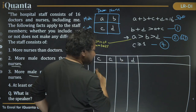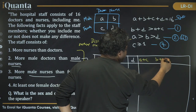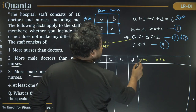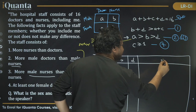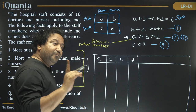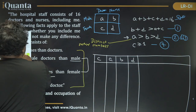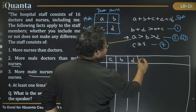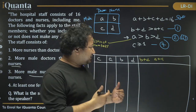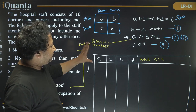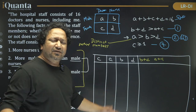I'll set up columns for c, a + b + d, a, b, d, b + d, and a + c. The sum of the last two columns always equals 16. Since b + d must be greater than a + c, the minimum split is 9 and 7 — so b + d ≥ 9 and a + c ≤ 7. I'll test c = 1, 2, 3, 4 and see how far we go.